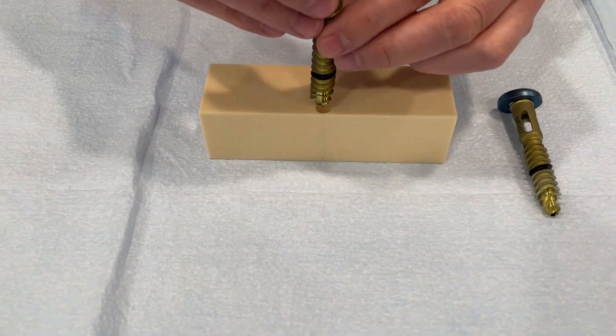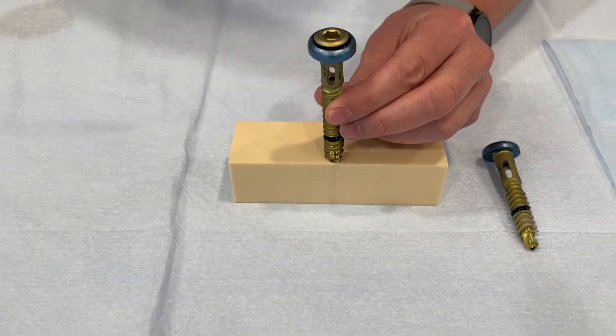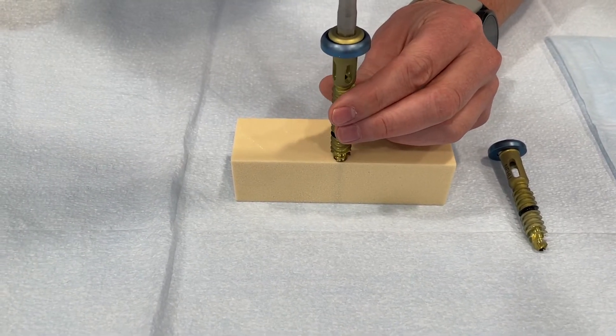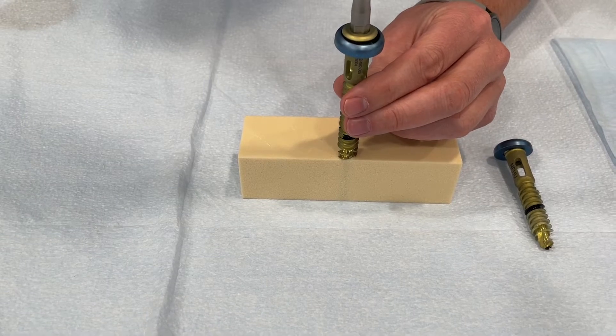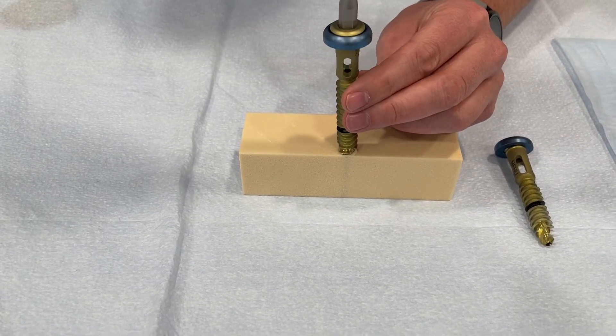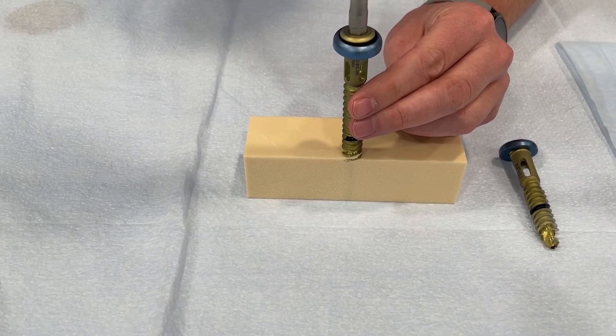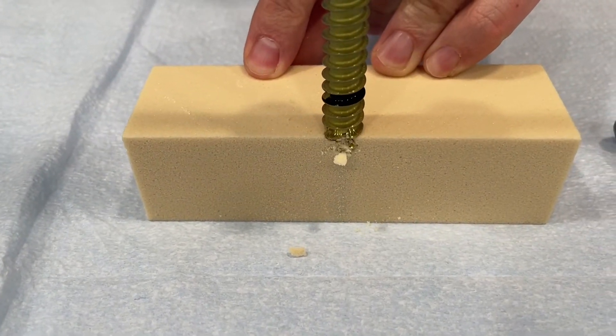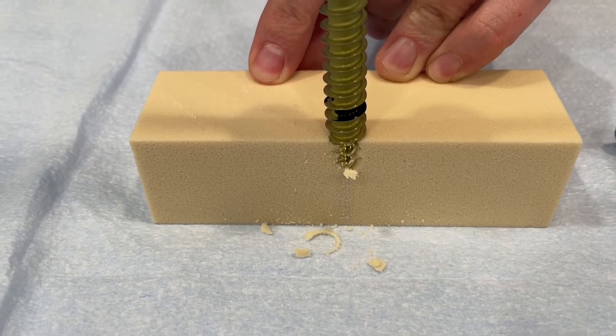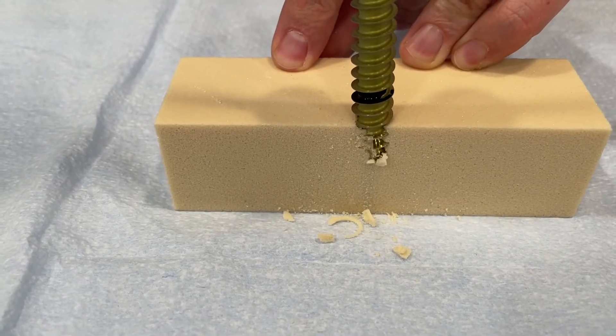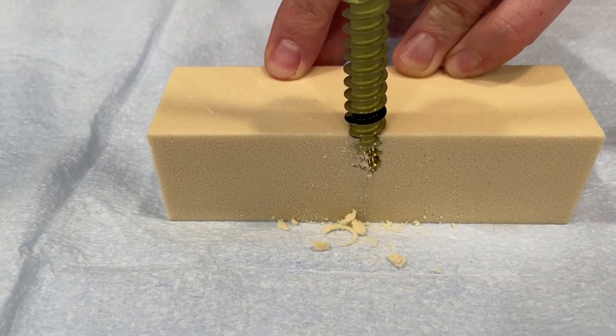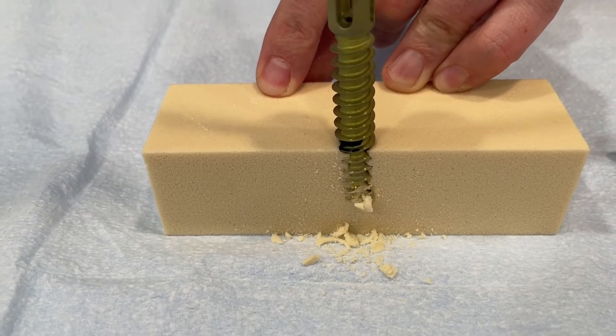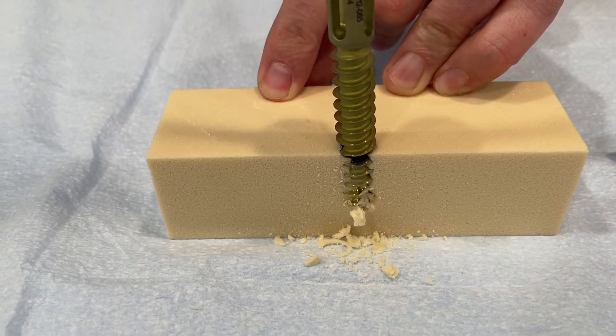So here we have the original screw. We're going to do our best to make sure it goes in nice and straight. We're going to insert that all the way down until the top of that black thread is integrated. You can see what it's doing as it goes down in. A few more turns, one full rotation, stop right there.